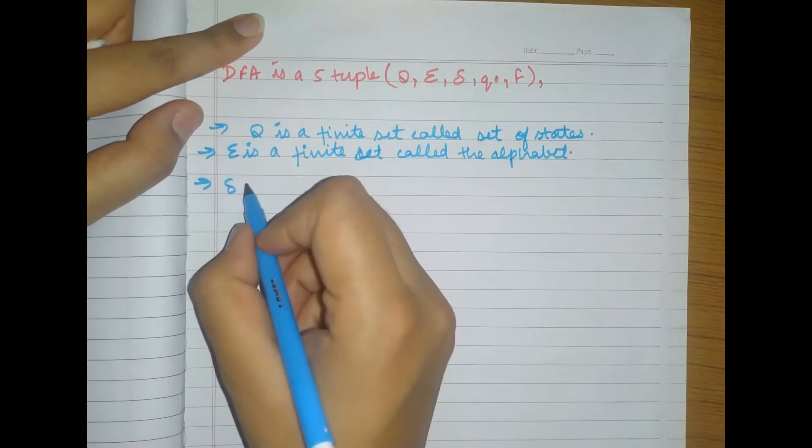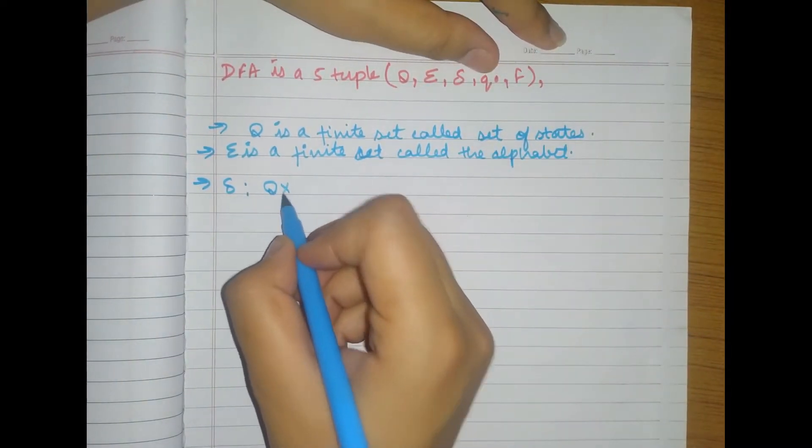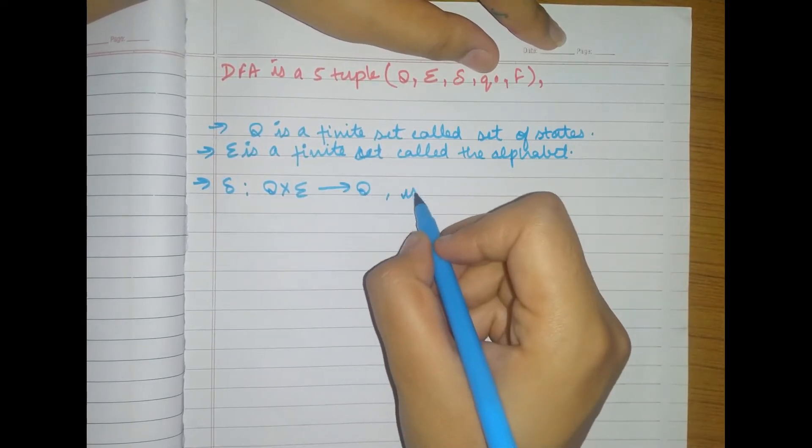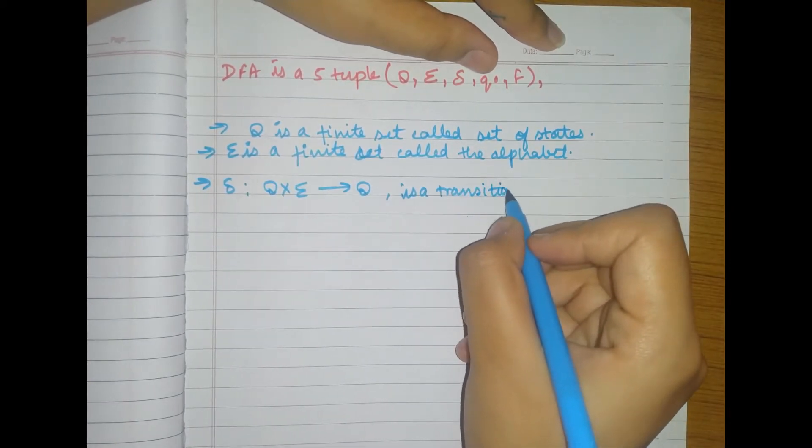What is this symbol here? This is, we can write this as, which is a transition function.